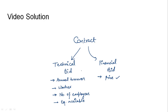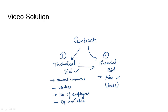For awarding a contract, the technical bid is opened first and then the financial bid is opened. The reason is that once the technical bid is opened, the technical competence of the contractor is proved — that he is capable of doing the job — and then it is checked which contractor can do the job at the least price.